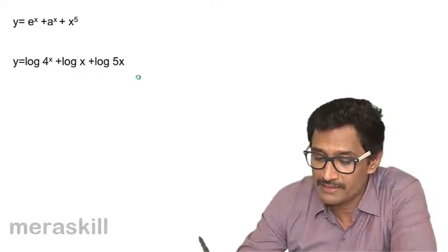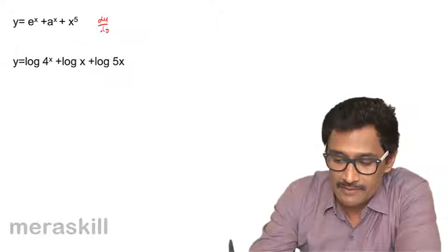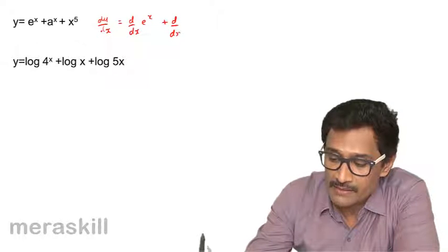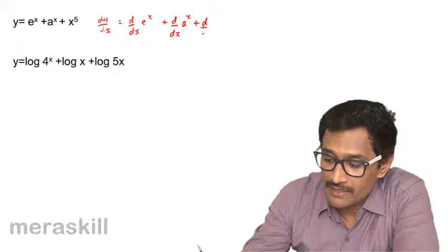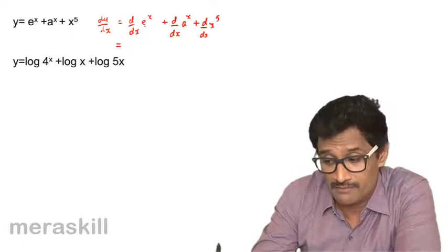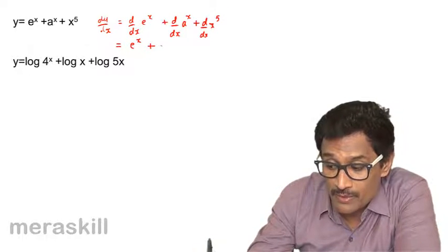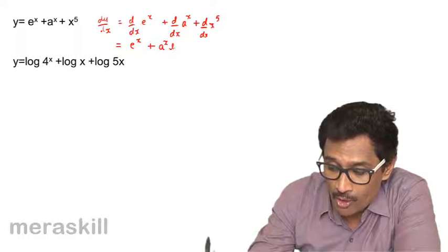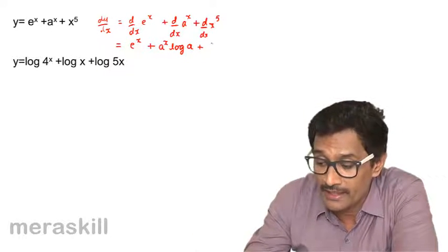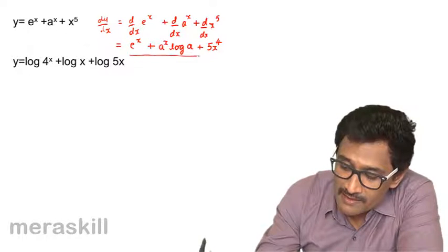Alright, let's take up a few examples — the fifth example. In this case, dy by dx is equal to d by dx of e raised to x, plus d by dx of a raised to x, plus d by dx of x raised to 5. Now, d by dx of e raised to x is just e raised to x into d by dx of x, which is 1. d by dx of a raised to x is a raised to x times log a to the base e. And d by dx of x raised to 5, using the power rule, is 5x raised to 4. This is how we use the addition rule.